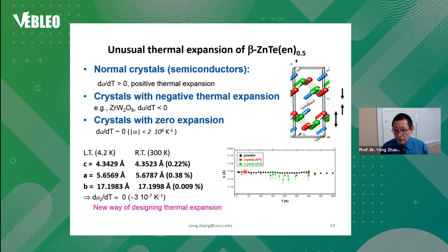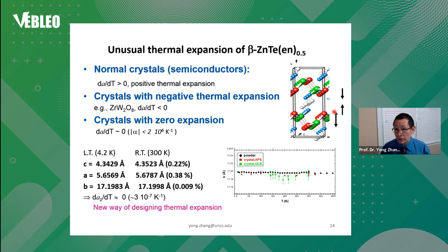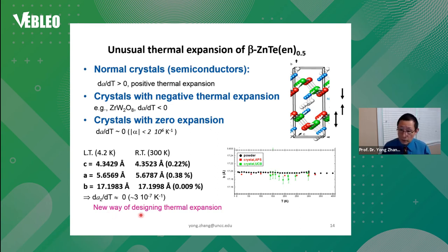We measured from 4K all the way to 400K and it shows very small or no change along the stacking direction. The reason is that when you increase the temperature, the inorganic slab expands but the organic molecule can shrink, so they compensate each other perfectly. This gives us a new way to design thermal expansion — you can make it negative or positive by tuning the structures.